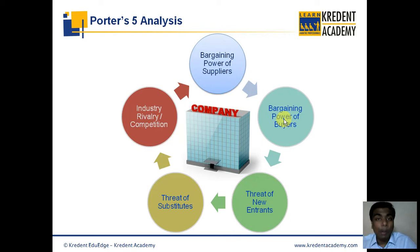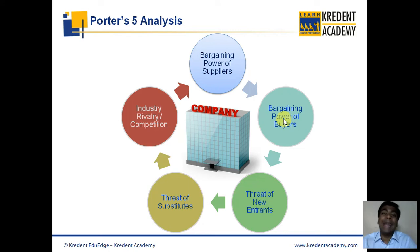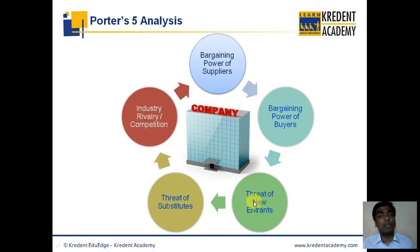The next factor is the bargaining power of buyers — how much influence does the buyer have on the contracts or terms negotiated between the company and its customers. For example, if a company has only one major client, the bargaining power of that buyer is going to be very high, since that client could enforce terms beneficial to itself, hurting the company's profits. Ideally, a company would like the bargaining power of its buyers to be low as well.